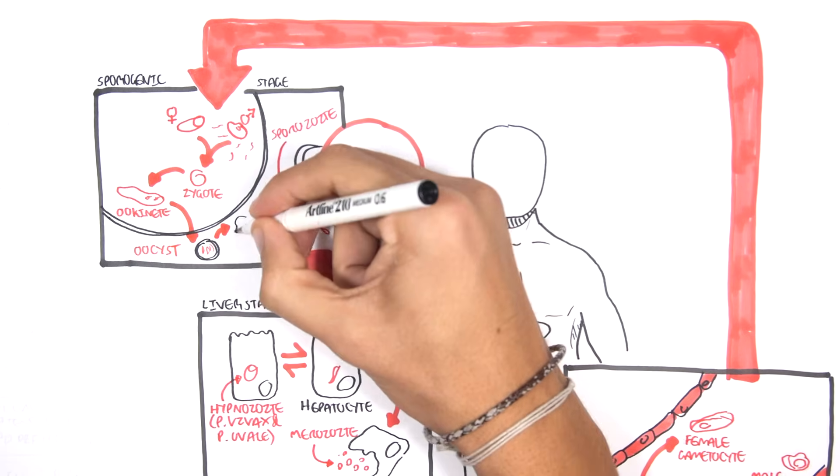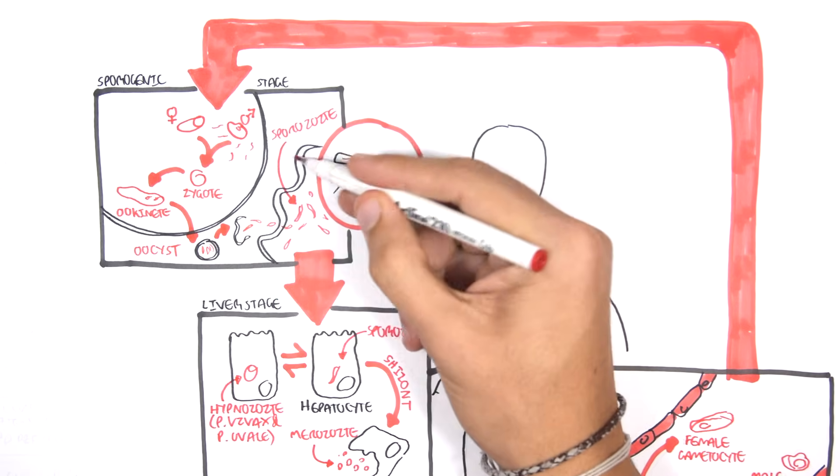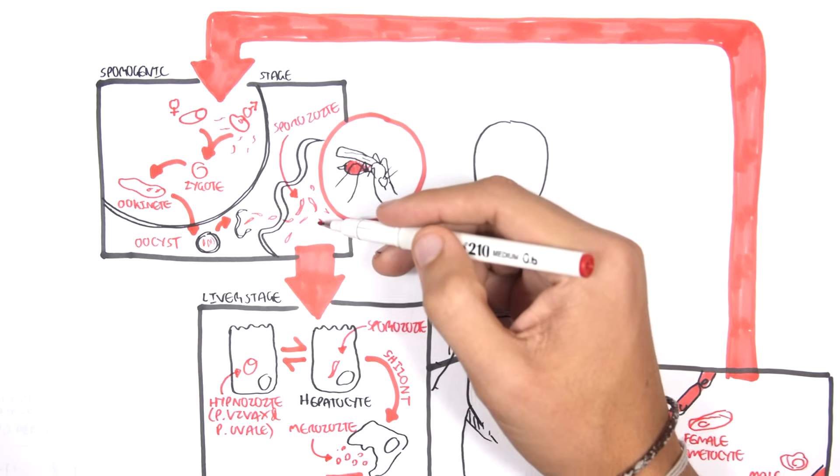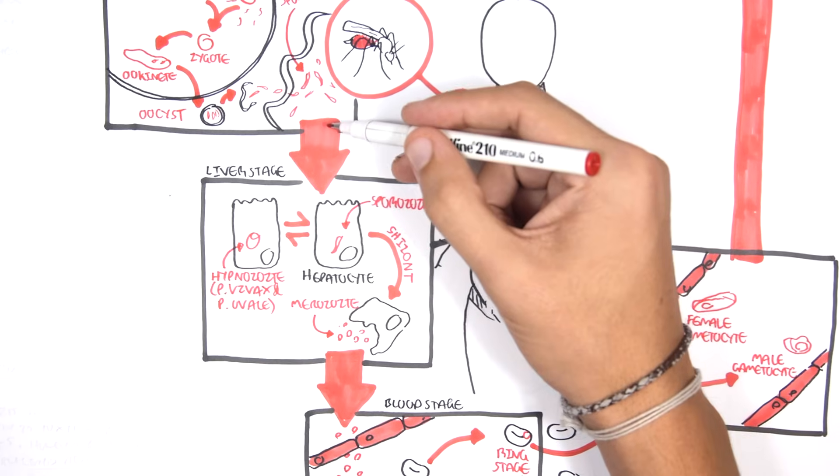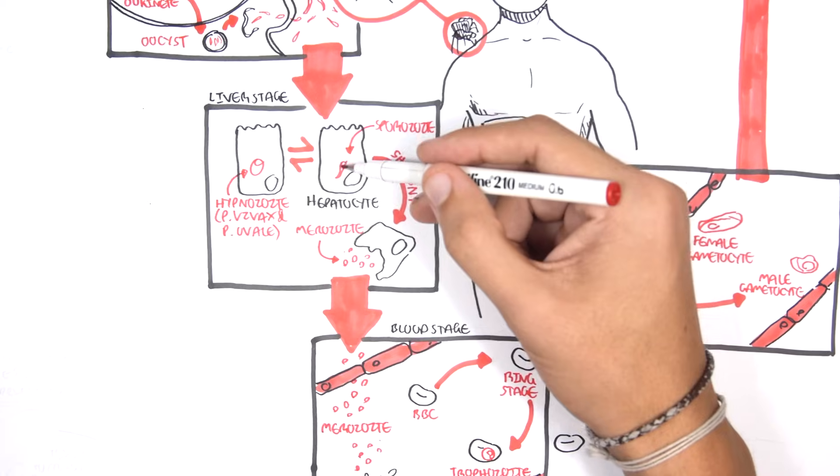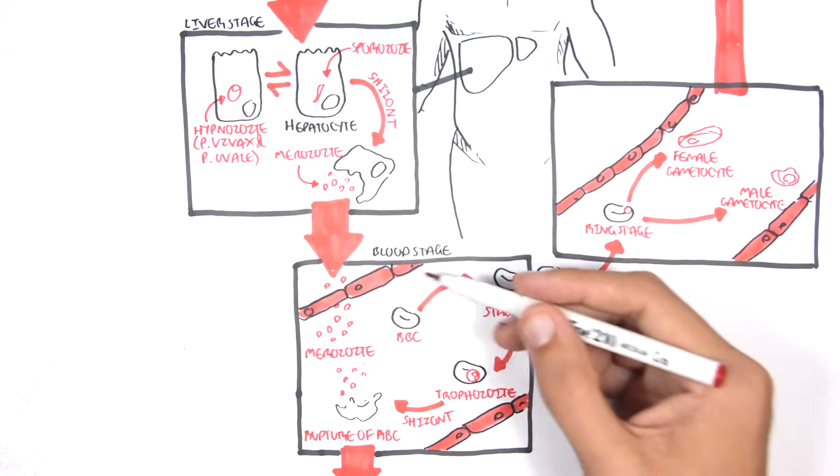The oocyst then matures and ruptures, releasing its content, which are the sporozoites. The sporozoites will remain in the salivary glands until the infected mosquito will feed again. It will feed off humans again. And then the cycle, this whole cycle can continue.